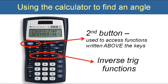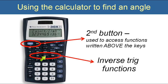Now we're going to use the calculator to find an angle when we're given a function value. We'll need two buttons: the second button, which accesses functions written above the keys, and the inverse trig functions — inverse sine, inverse cosine, and inverse tangent — written above the sine, cosine, and tangent keys.